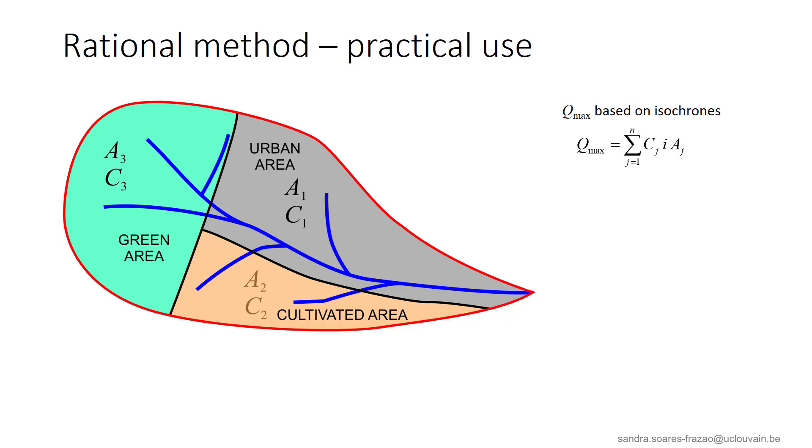Instead of considering isochrones, we will divide the catchment in areas of equal runoff coefficient, depending on the soil coverage. Knowing the layout of the catchment, this can be done easily. The maximum discharge is then evaluated by this formula, where C is an average runoff coefficient for the catchment, calculated as a weighted average as indicated here.